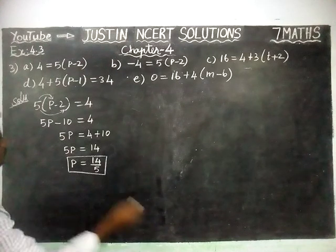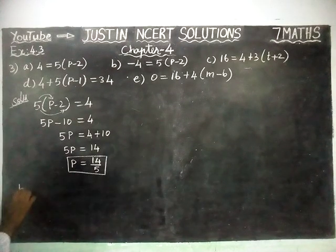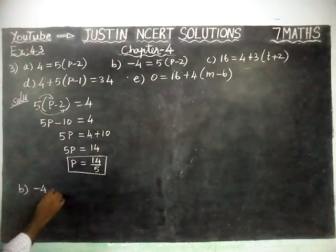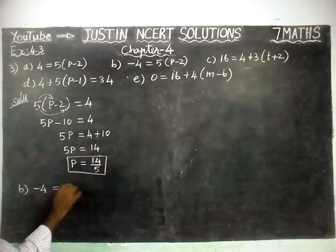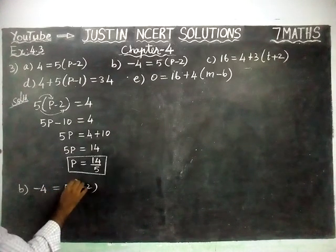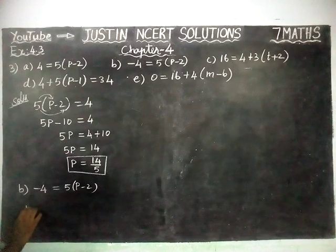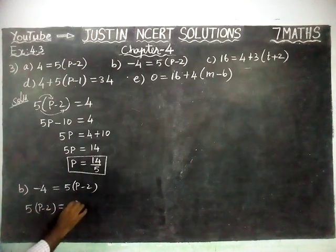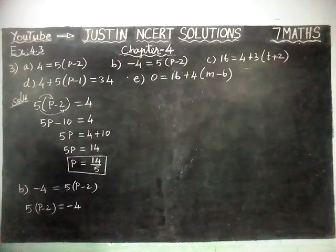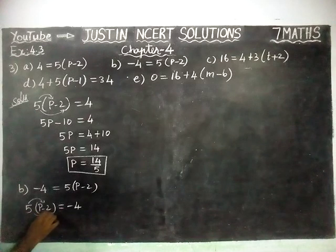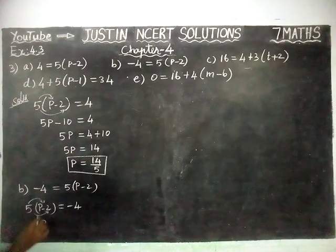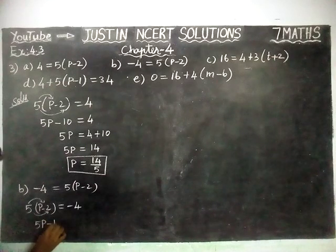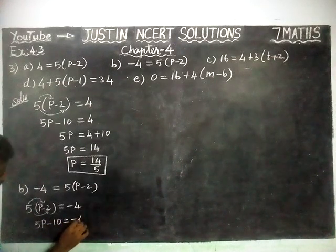Part B: minus 4 is equal to 5(P minus 2). Here also, we are going to interchange the places. 5(P minus 2) is equal to minus 4. 5 is common for both numbers, so 5 into P and 5 into 2 will come. 5 into P equals 5P, plus into minus equals minus, 5 twos are 10, is equal to minus 4.